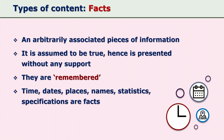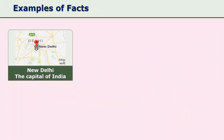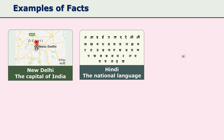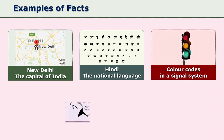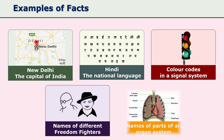Facts are presented without further support or exemplification — they are simply stated and remembered. Examples include time, dates, places, names, statistical information, and specifications. Specific examples are: New Delhi is the capital of India, Hindi is the national language of India, color codes in a signal system, names of freedom fighters, and names of parts of organ systems.